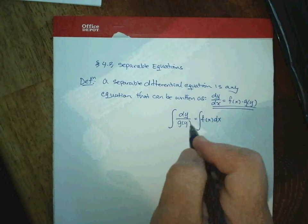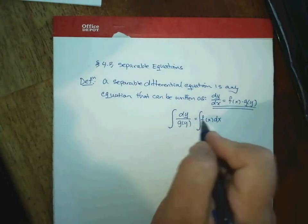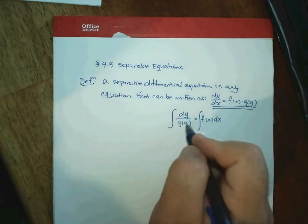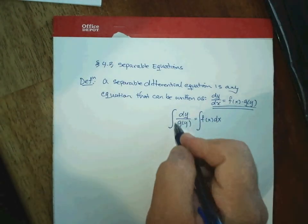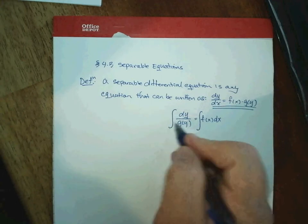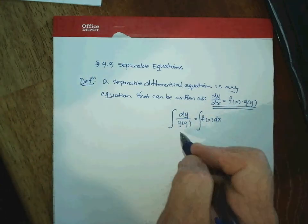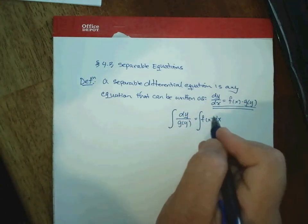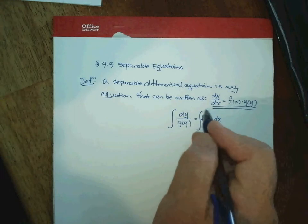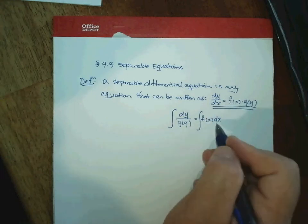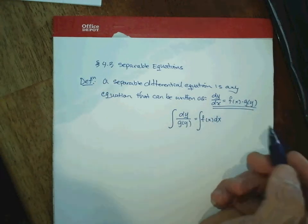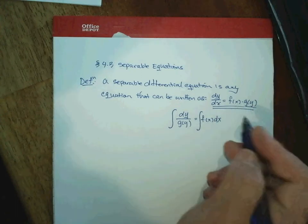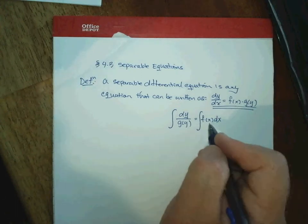If you could not separate the variables — if you had x's and y's mixed together — writing the integral symbol wouldn't do you any good. You wouldn't be able to integrate it. While it may be true that both sides are equal, you would not be able to integrate when variables are mixed.